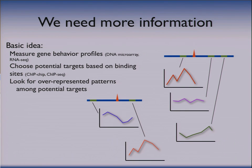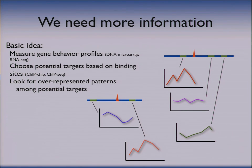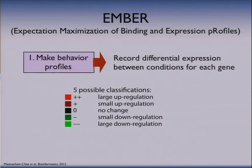I would infer by looking at these expression profiles that the red profile and the orange profile look pretty similar to each other, while the other genes are different. So my inference would be that this gene and this gene are being regulated and the others are not. So this is the idea — that's the very qualitative idea. I put this together in a more quantitative, precise method.